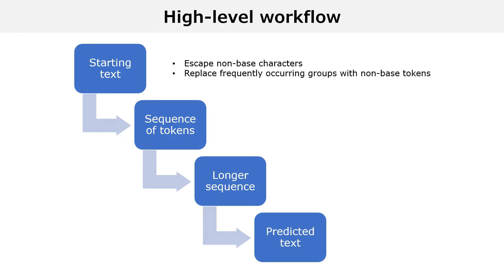When our starting sequence of tokens is ready, we use the language model to add new tokens to the sequence. We predict one token at a time, we add it to the sequence, then we make a new prediction, and so on. When we have generated enough new tokens, we need to convert the new longer sequence to text. First, we replace the non-base tokens with the groups of base tokens that they represent. Then we replace escape sequences with their corresponding characters and symbols. Once we are done, we have a new longer text that was generated with our language model.